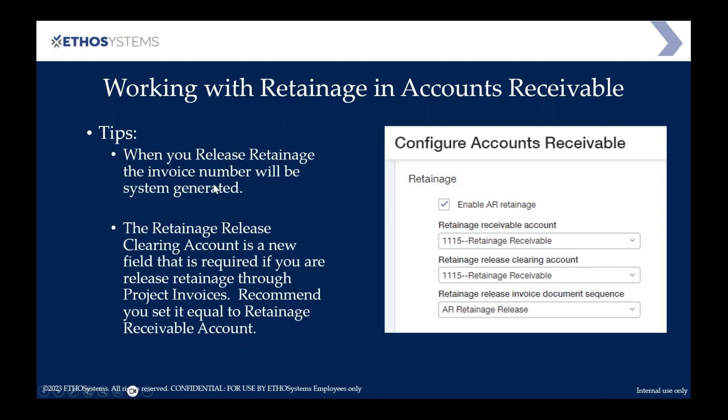A couple of things to keep in mind — here are some tips and tricks. First of all, when you release retainage not as part of the invoice, but through the release retainage feature within the system, it will generate an invoice number automatically using a sequence number. Several clients have asked about assigning an invoice number to that — unfortunately, you can't. It's automatic and has to go through that process.